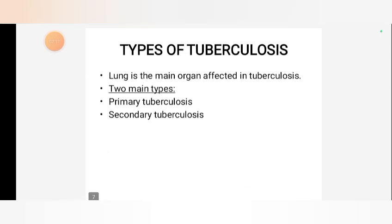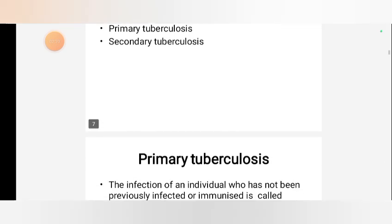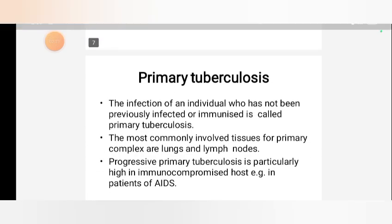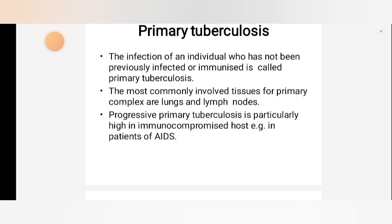Types of tuberculosis: the lung is the main organ affected. Two main types — primary tuberculosis and secondary tuberculosis. Primary tuberculosis is the infection of an individual who has not been previously infected or immunized. The most commonly involved tissues for primary complex are lungs and lymph nodes. Progressive primary tuberculosis is particularly high in immunocompromised hosts, for example in patients with AIDS.